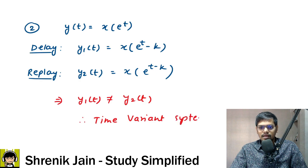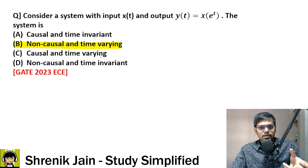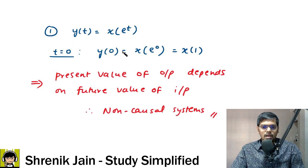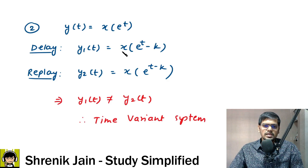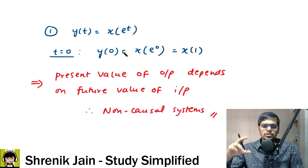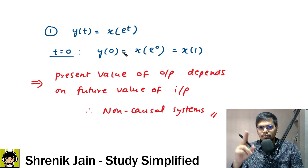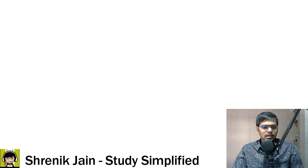So if it is a time variant system, the answer is non-causal and time variant — option B is absolutely correct. These types of concepts are repeated in electrical, instrumentation, and EC papers. Previous year concepts are very important because questions won't repeat, but concepts definitely will.